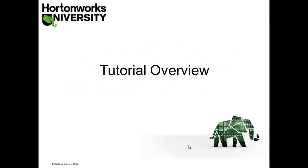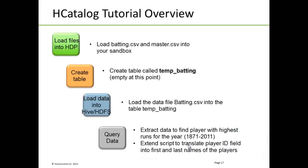Let's take a look at a simple H-Catalog tutorial. From the Hive tutorial that accompanies the sandbox, we have several files of baseball statistics and we're going to bring them into Hive and do some simple computing with them. We're going to find the player with the highest runs for each year. This file has all the statistics from 1871 to 2011 and contains more than 90,000 rows. Once we have the highest runs, we will extend the script to translate a player ID field into the first and last names of the players.